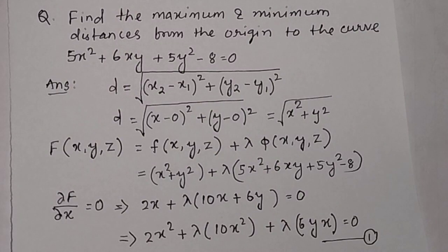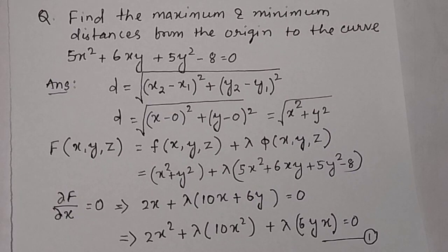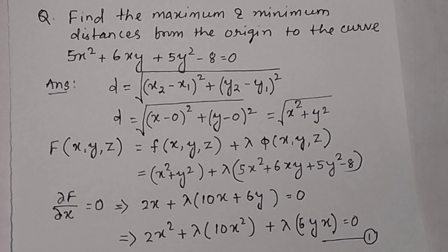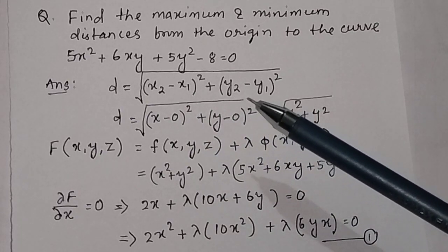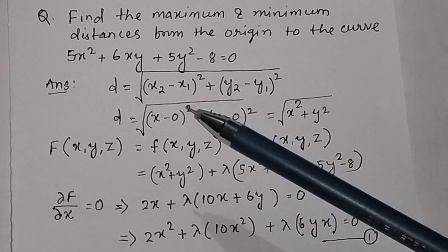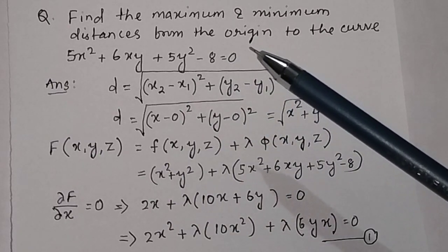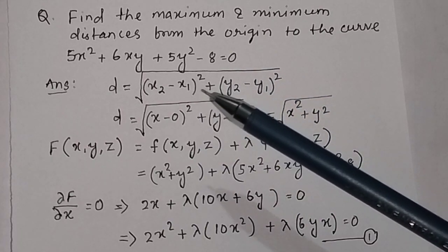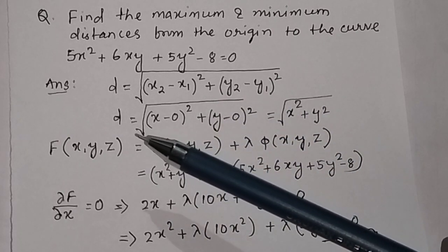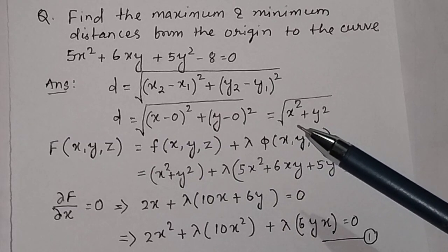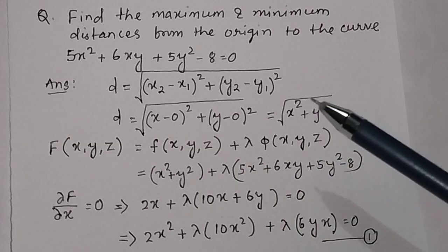Find the maximum and minimum distances from the origin of the curve 5x² + 6xy + 5y² - 8 = 0. To find the distance, we use the formula d = √((x₂-x₁)² + (y₂-y₁)²). Since we find the distance from the origin, x₁ and y₁ are 0, so the distance formula becomes d = √(x² + y²).